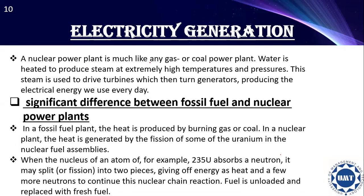A nuclear power plant is much like any gas or coal power plant — heating is used to produce steam at extremely high temperature and pressure. This steam drives turbines, which then turn generators, producing the electrical energy we use every day. The main difference between fossil fuel and nuclear power plants is that in a fossil fuel plant, heat is produced by burning gas or coal, whereas in a nuclear plant, heat is generated by the fission of radioactive elements like uranium in the nuclear fuel assemblies. When the nucleus of an atom — for example uranium-235 — absorbs a neutron, it may split into pieces, give up energy, and release more neutrons.